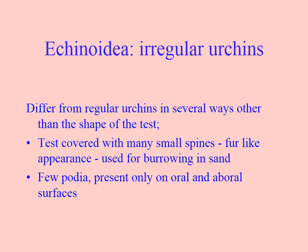Irregular urchins, like heart urchins, are covered with lots of small spines. They don't use them for defense because they don't live on the surface — they tend to burrow. The small spines are used for burrowing and movement, and their defense is to be invisible. You'll often find these tests at Pilot Bay and they're very fragile.